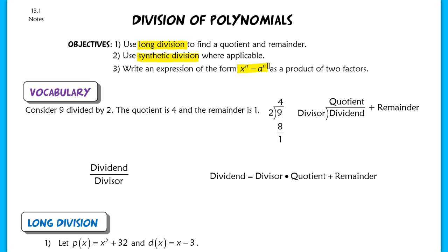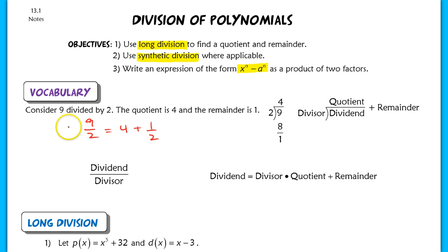Let's start with some vocabulary because I'm going to use specific words throughout this lesson. When you look at the number 9 divided by 2, we can rewrite that as 4 plus 1 half. So 4 is the quotient and 1 is the remainder. Those terms are pretty easy to use because you've probably seen them plenty of times.